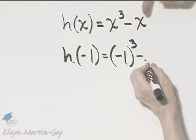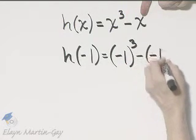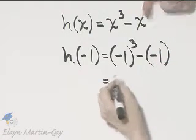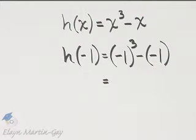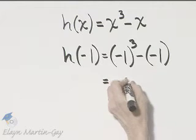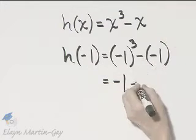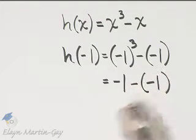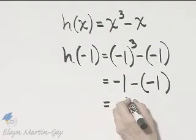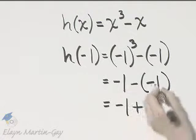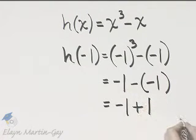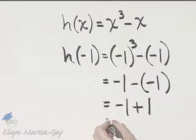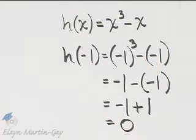Be very careful, there's that minus, and then x is negative 1. So we have negative 1 cubed, that's negative 1 times negative 1 times negative 1. That is negative 1, and then I'm subtracting a negative 1. So that's negative 1 added to the opposite of negative 1, which is 1. h of negative 1 just happens to be 0.